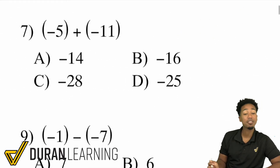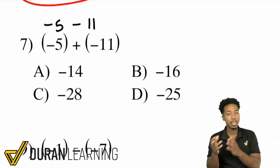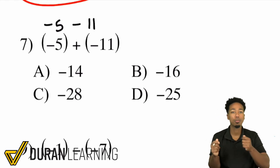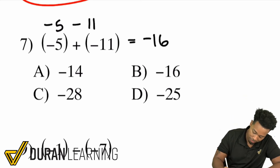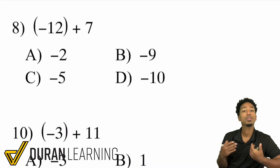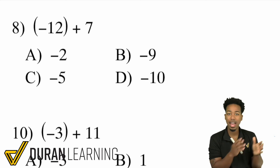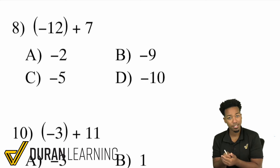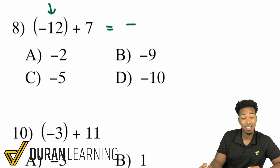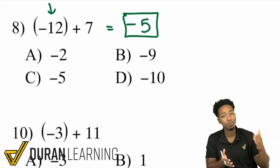Number 7: negative 5 plus negative 11. The other way to look at this is negative 5 minus 11. Either way, you have a negative number getting more negative, so just add 5 and 11 to get 16, and keep it negative — that's negative 16. Number 8: negative 12 plus 7. You have a negative plus a positive, so take the difference. When opposite signs are added, take the difference and keep the sign of the bigger number. The bigger number is 12, so the answer is negative. 12 minus 7 is 5, so the answer is negative 5.